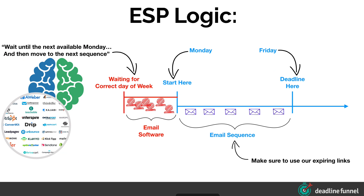What you would do is have certain people tagged in your system. They're in a holding area — sort of in limbo — waiting just a few days until the next Monday, in this example, rolls around. Then they would be moved into the sequence, with the integration with Deadline Funnel so that everything is synchronized. Any time you're sending out emails, make sure to use our expiring links to keep your tracking accurate from device to device.